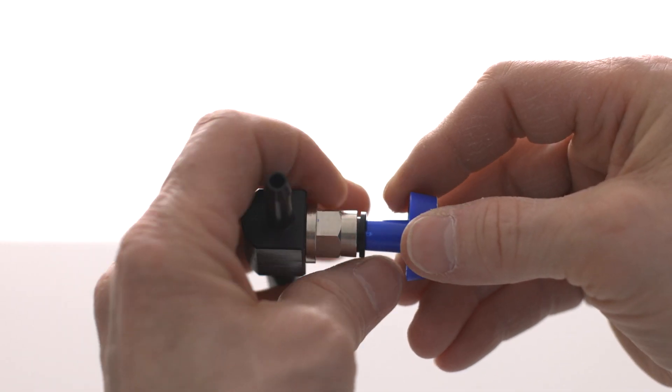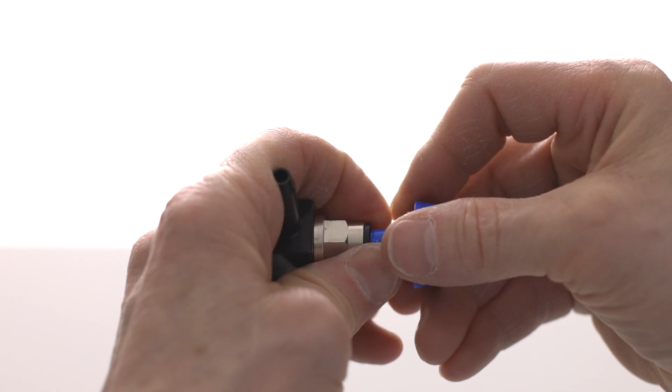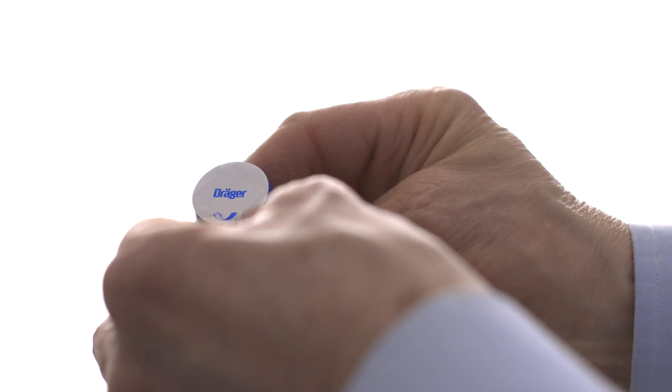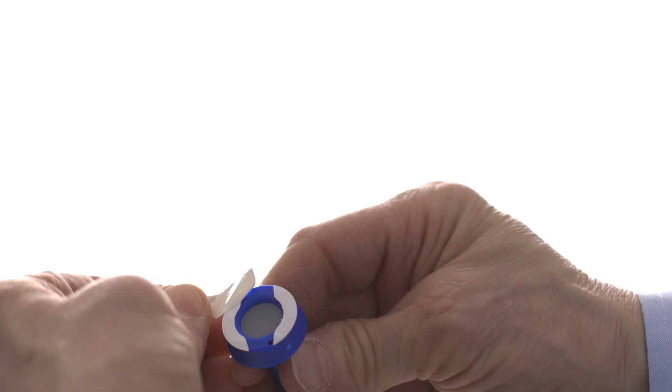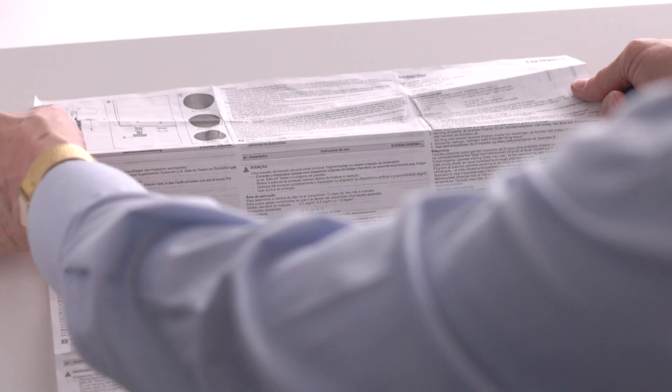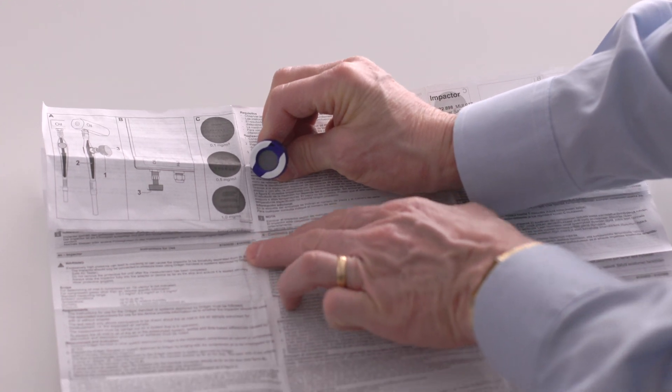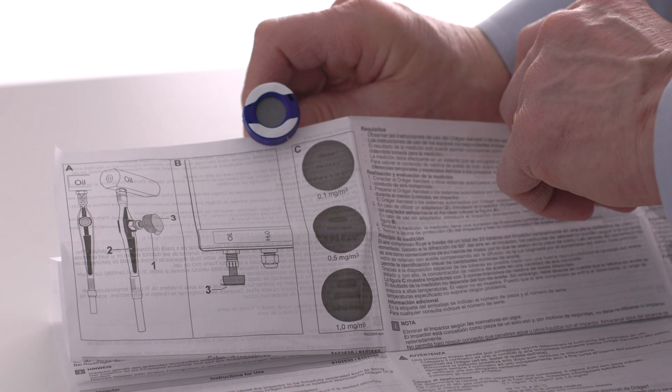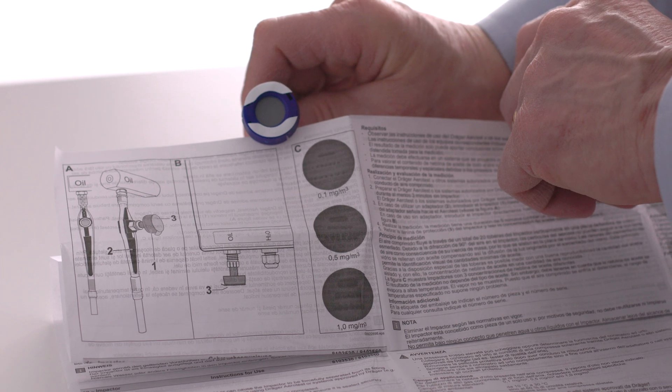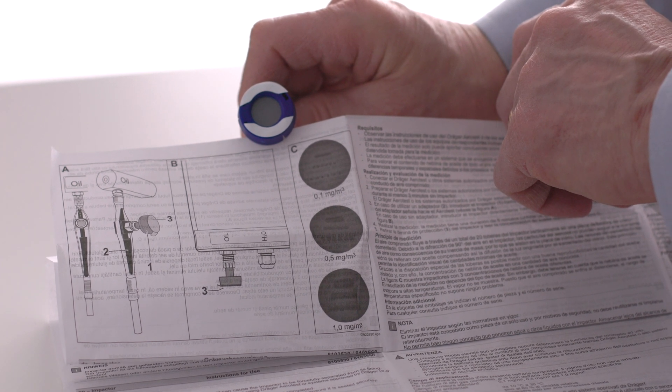Press down on the black ring of the adapter to release the impactor. Remove the tear-off cover with the Draeger logo to expose the indication surface. Compare the pattern on the impactor with the three reference standards in the instructions for use. Here we can see no visible pattern indicating the oil is below the detection limit of the oil impactor.